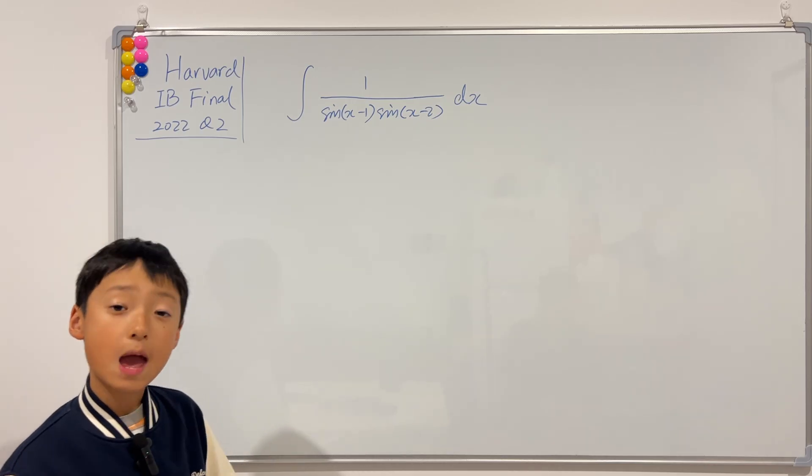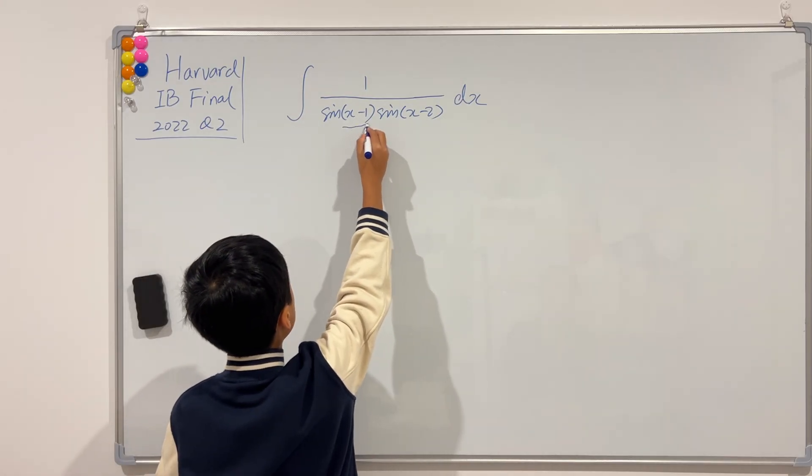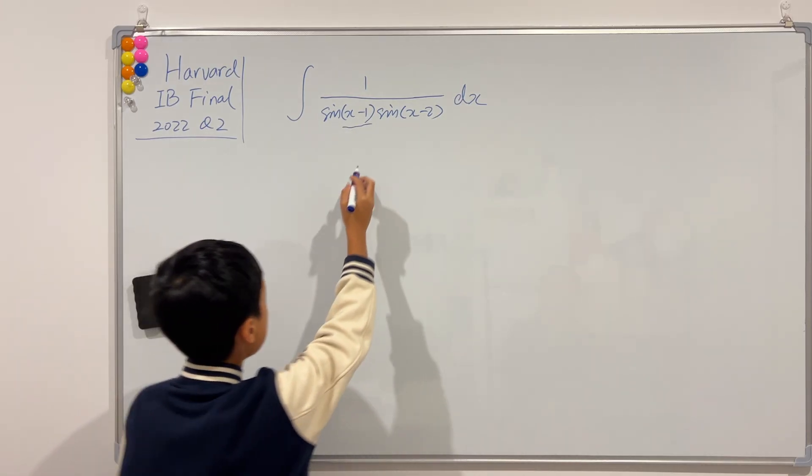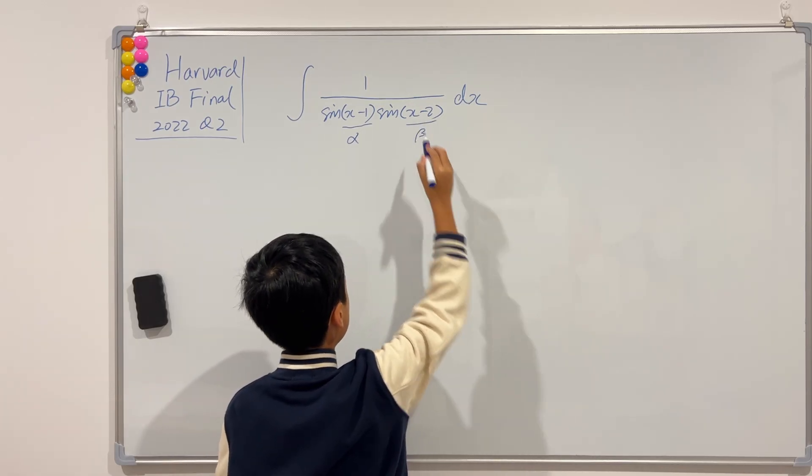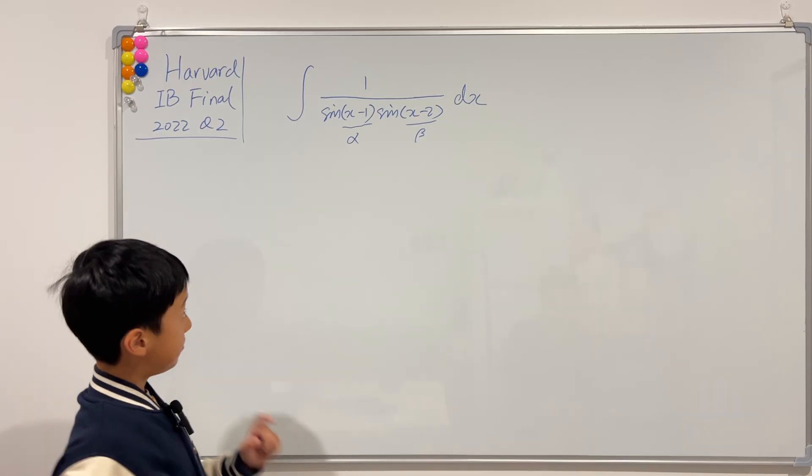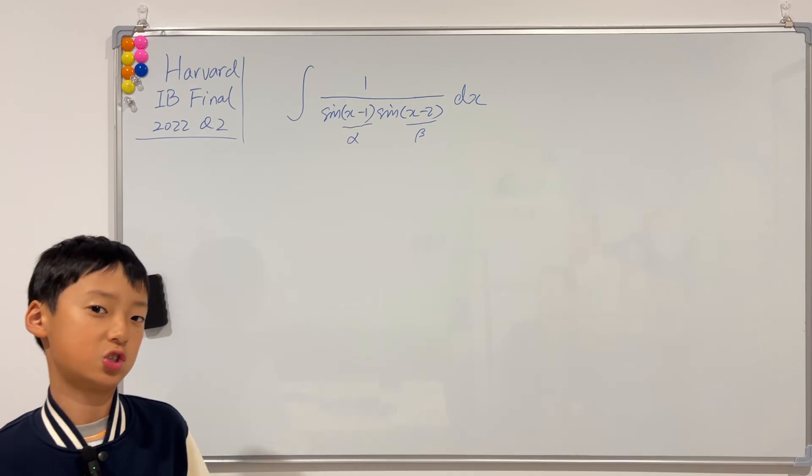The first step is that I'm just going to let this x-1 inside of the sine be alpha, and this x-2 be beta. And that is actually the exact same thing as we did in that 2016 JEE Advanced Question.